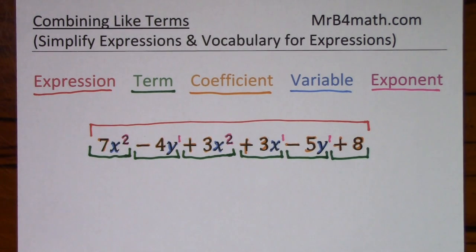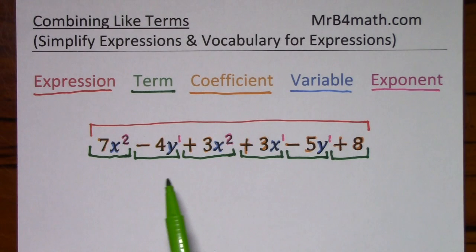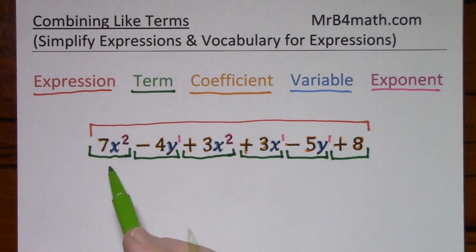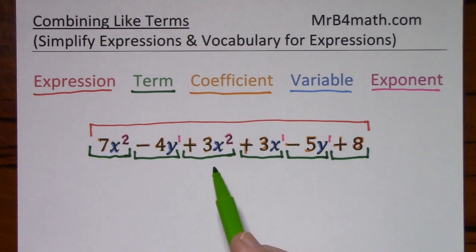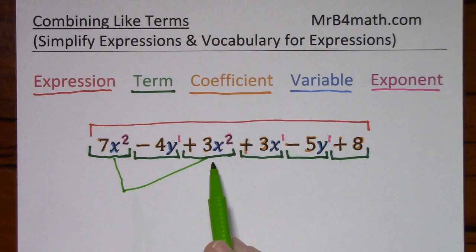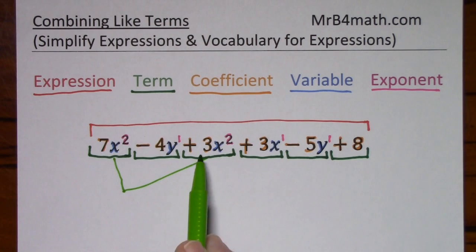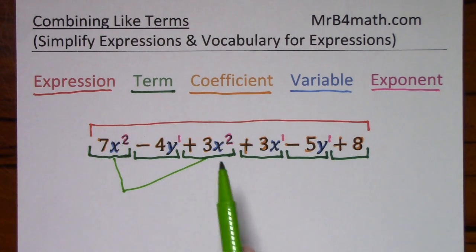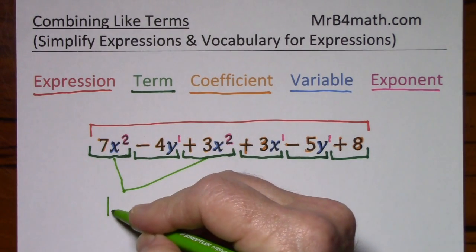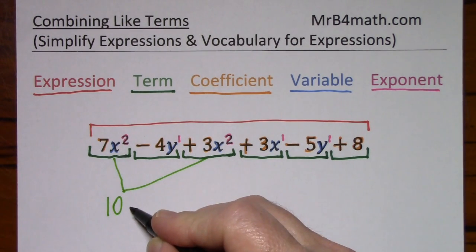Now that we've addressed some of the vocabulary, we can talk about like terms. A like term has the same variable and exponent. So 7x squared and 3x squared are like terms. Even though they're not sitting next to each other, you can combine them — you simply add or subtract the coefficients based on their signs. Positive 7 and positive 3 give us a positive 10. You're going to keep that variable and exponent.